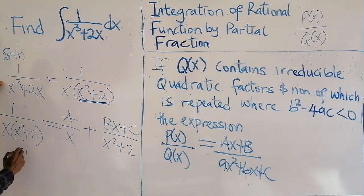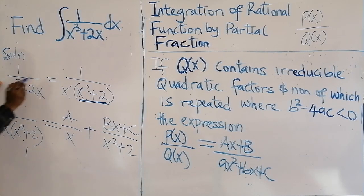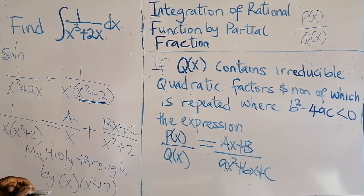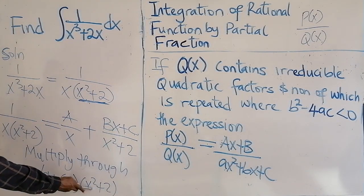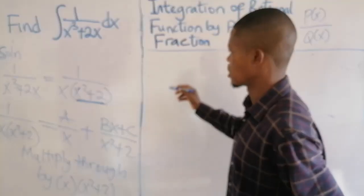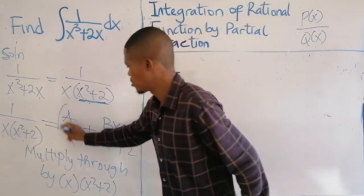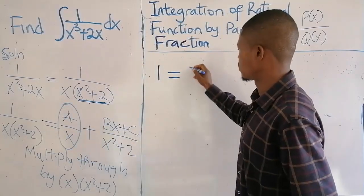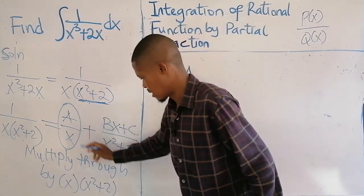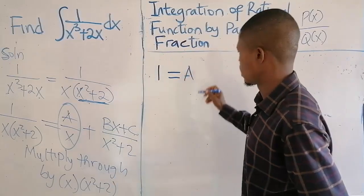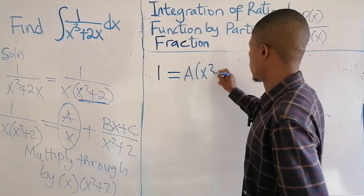Then the next thing to do now is to multiply through by the common factor, which is X times X squared plus 2. That will give us 1 on the left and then on the right, this fraction times the common factor. So that will give us A,